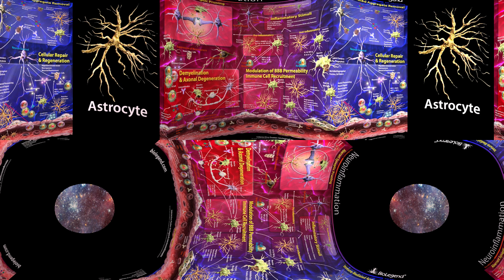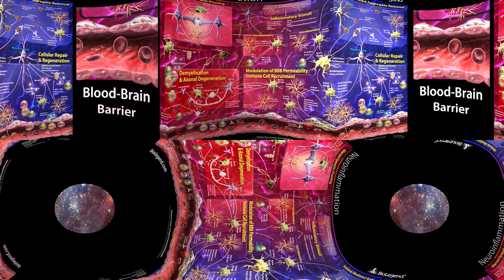Chronic neurotoxic insults lead to persistent inflammatory reactions primarily mounted by reactive microglia and astrocytes. At the blood-brain barrier, pro-inflammatory cytokines, chemokines, and matrix metalloproteases produced by reactive microglia and astrocytes can modulate the permeability of the BBB and eventually disrupt it, induce infiltration of peripheral immune cells such as B cells, T cells, and monocytes, and further upregulate the production of pro-inflammatory cytokines by these cells.